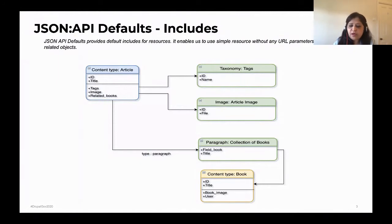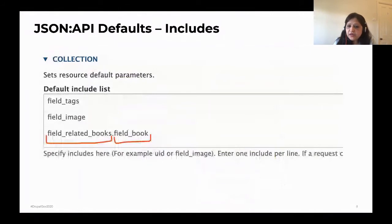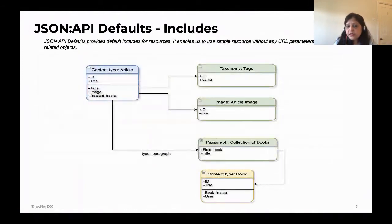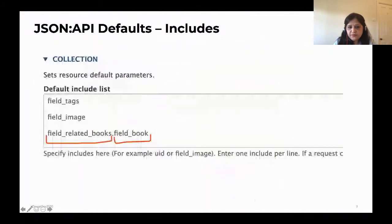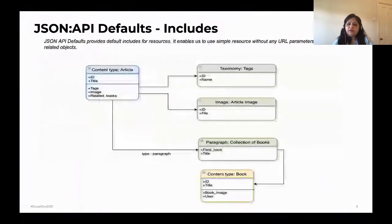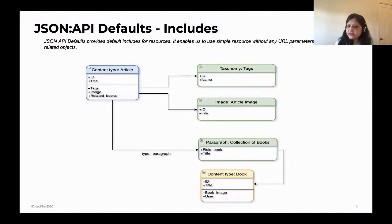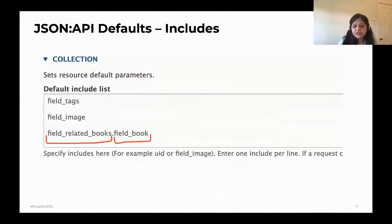To do that, we have a module called JSON API Defaults. Once you enable that module, it provides a block in the JSON API interface where we can add these relationships. What we are saying is: we need to include the information of these relationships in our resource type — I want the information for my tags, for my article image, and for my paragraph collection of books. But the catch is, if we have a nested relationship where article references a paragraph collection of books, which then references another content type book, simply adding the paragraph collection in the relationship will still not provide the book name. We have to deepen inside the relationship and go a step further.